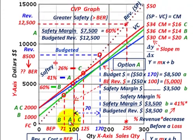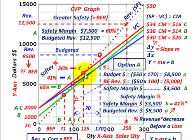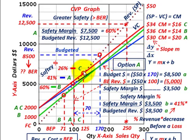I'm going to work through the safety margin percentage for option A, but you would do the same thing for options B and C. I'm showing three different options here just to see how the difference in fixed costs and variable cost per unit can affect your different break-even points — that's really what we're looking at here.